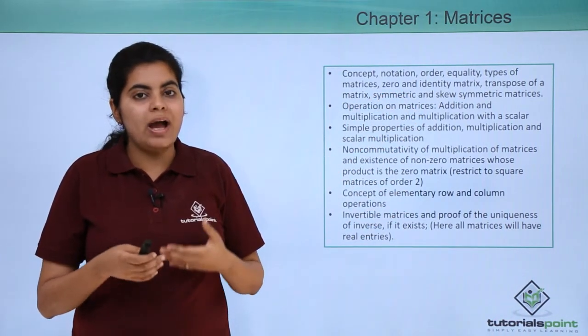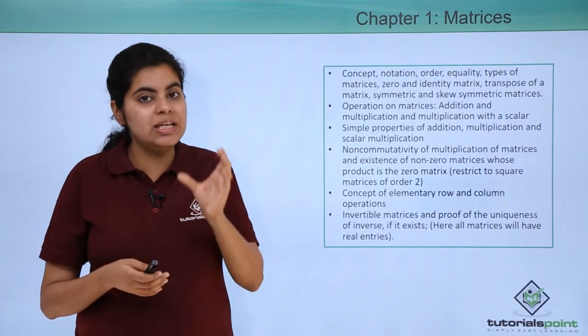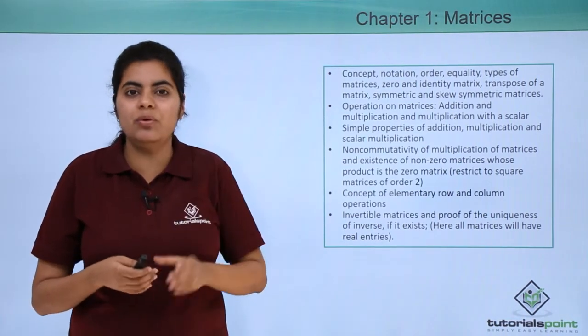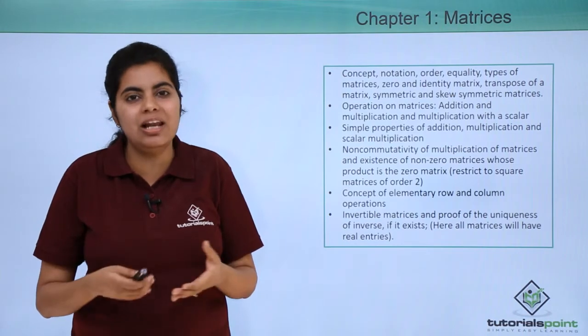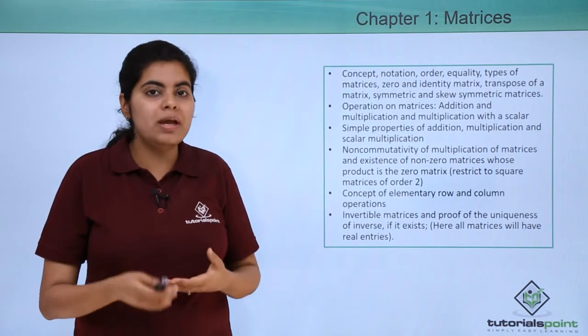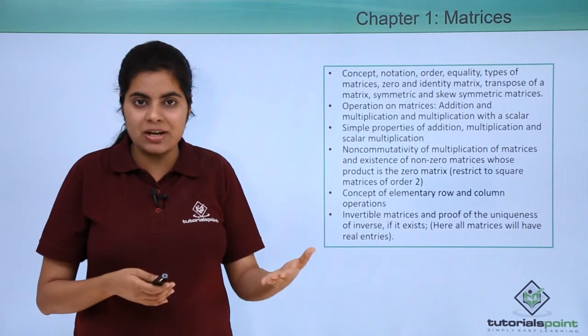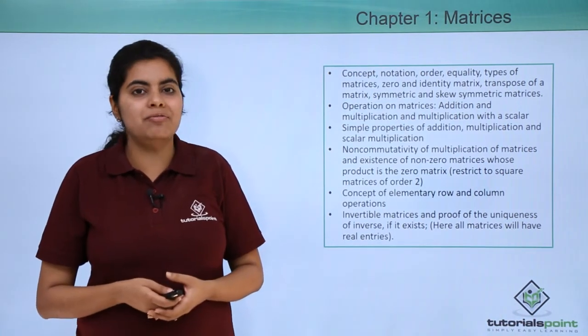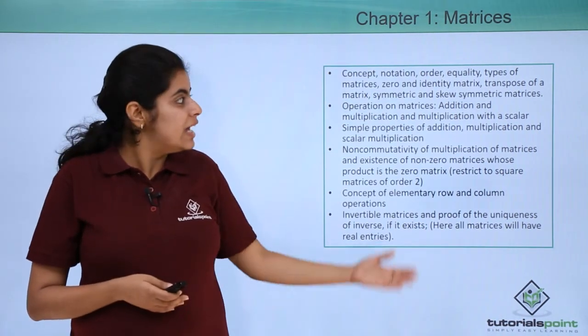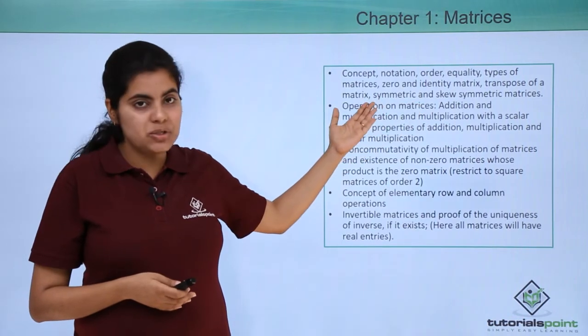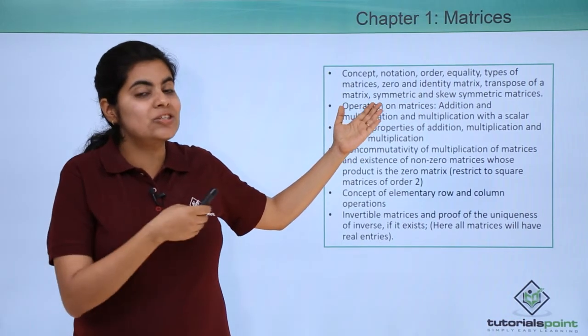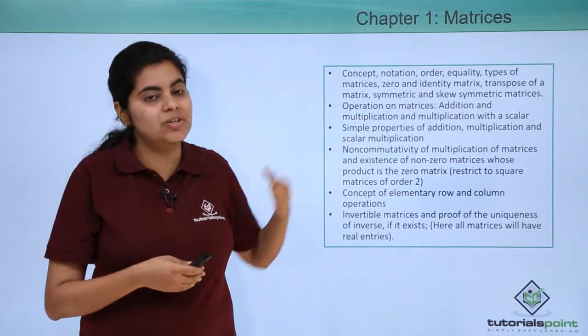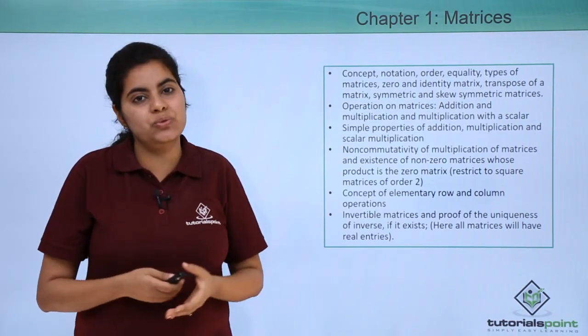Some people do actually get confused with zero matrix because there is one more name to zero matrix, which is null matrix. So you may find in some books it is written null matrix, in some it is zero matrix, but they are one and the same. Next would be transpose of a matrix, and the next topics symmetric and skew symmetric matrices, which are related to transpose.